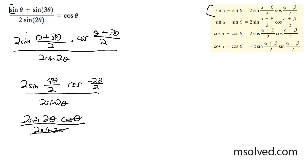These terms cancel out here, the 2 sine 2 thetas, and you end up with your cosine theta. That's how you prove it.